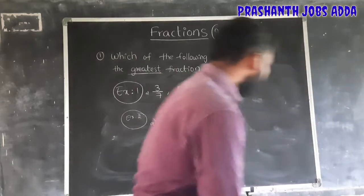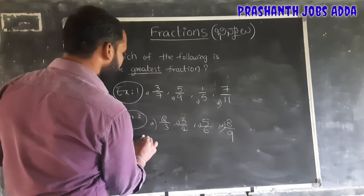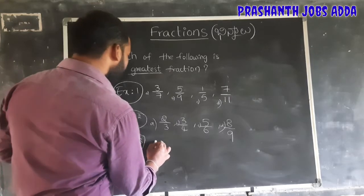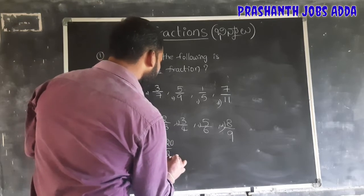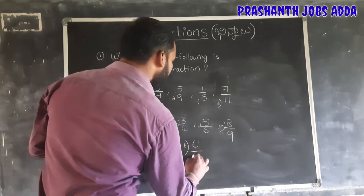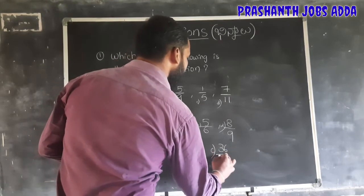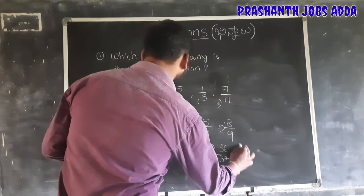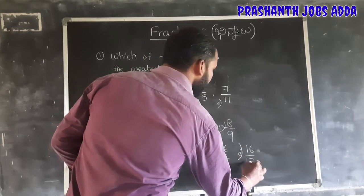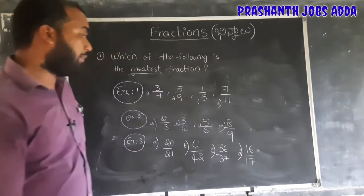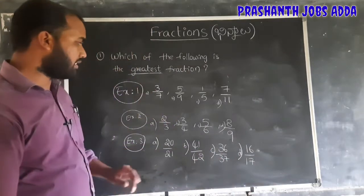Exercise problem 1 — what is the biggest fraction? Practice and it is easy. Exercise number 2: fractions are 2 by 3, 3 by 4, 5 by 6, and 8 by 9. Find the greatest fraction and write A, B, C, D in the comment box.